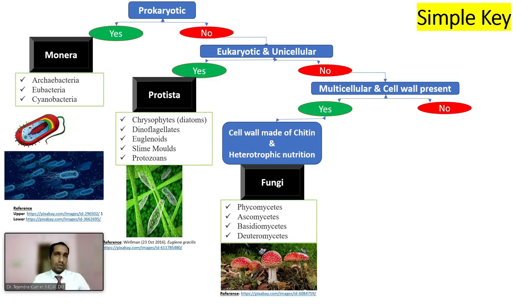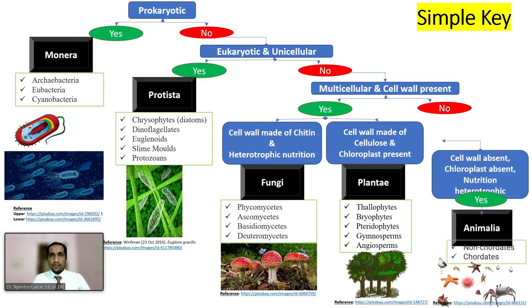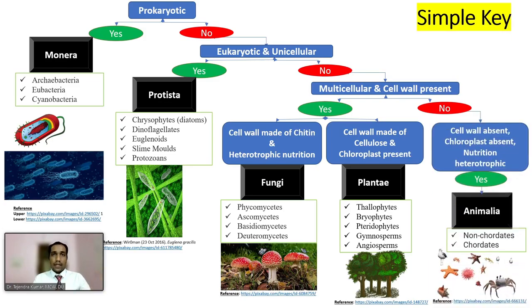If no, then do they possess cellulosic cell walls and have chloroplasts? If yes, they are plants, divided into Bryophytes, Pteridophytes, Gymnosperms, and Angiosperms. If again no, then they do not contain any cell wall or chloroplast — it means they are heterotrophic in nature and they are animals. They include non-chordates and chordates and many other subtypes which we will discuss.